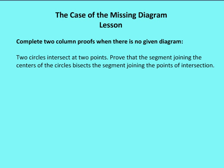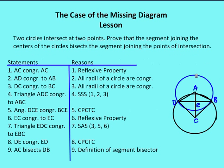So here we have two circles that intersect at two points. Prove that the segment joining the centers of the circles bisects the segment joining the points of intersection. The first thing we need to do is draw the figure. So I have the two circles here — circle A and circle C — and I draw a line between A and C and a line between D and B.